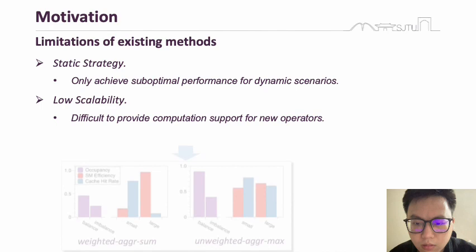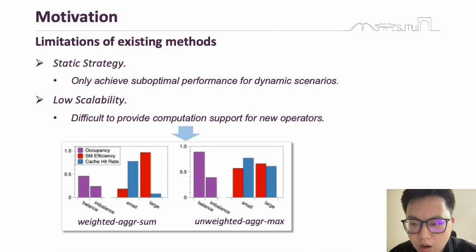Moving on to our results, we compare two operators: weighted aggregation sum and unweighted aggregation max. We can find that occupancy is significantly lower for imbalanced graphs than balanced ones. Additionally, smaller graphs have lower SM efficiency but higher L2 cache hit rate than larger graphs.